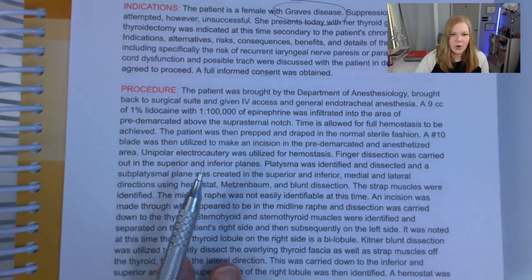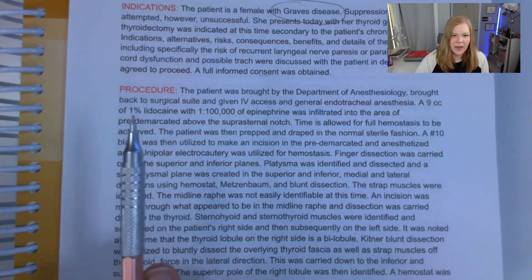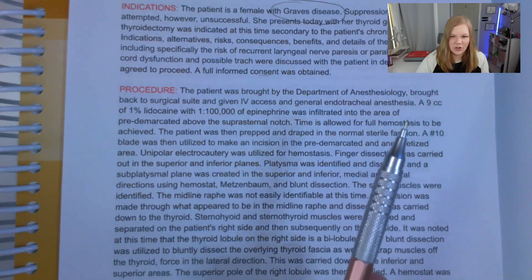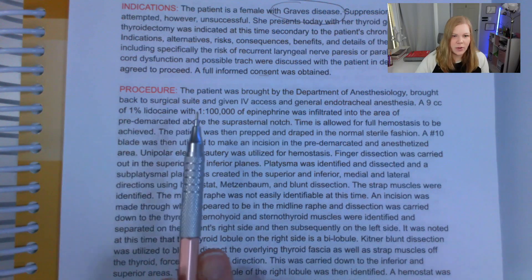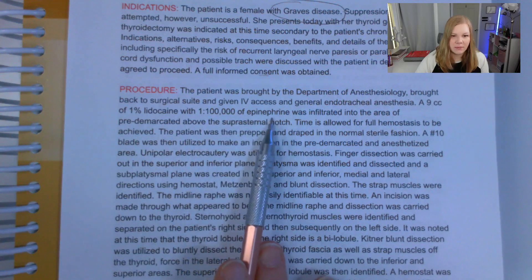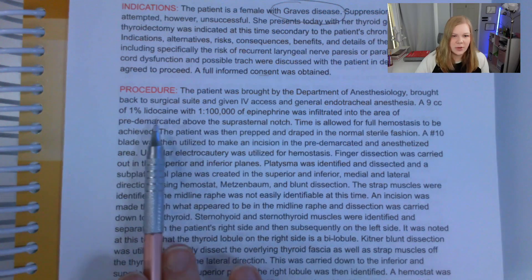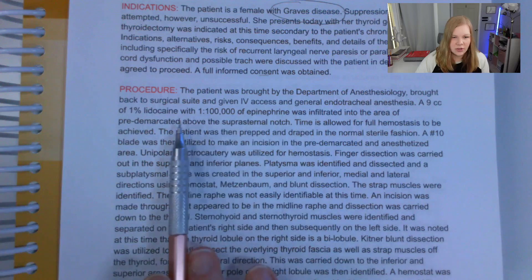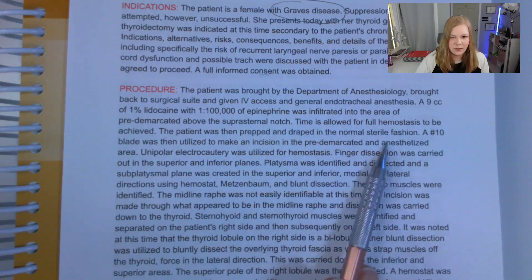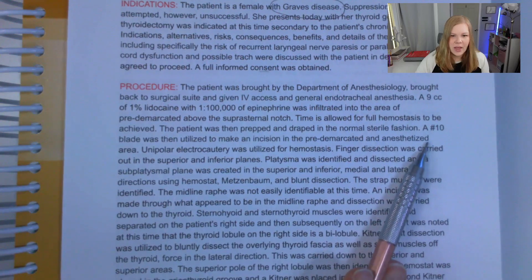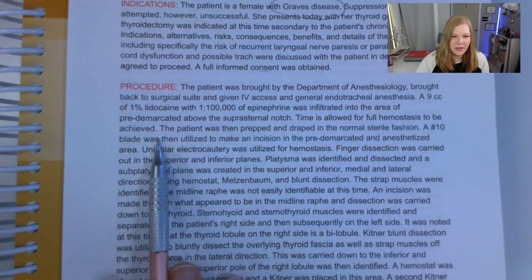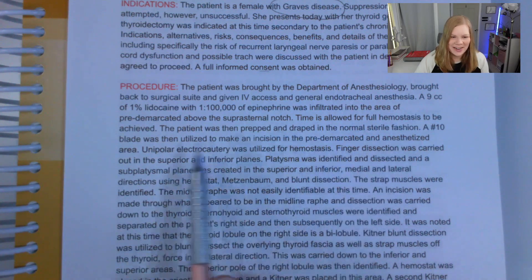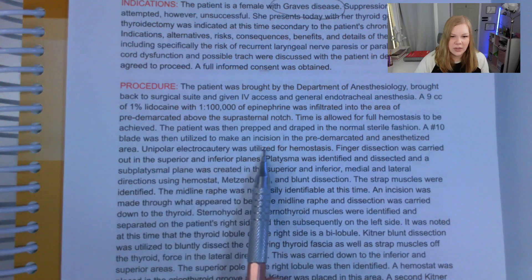The patient was brought back to the surgical suite, given IV access and general endotracheal anesthesia. Nine cc of 1% lidocaine with 1:100,000 epinephrine was infiltrated into the area demarcated above the sub-sternal notch. Time was allowed for full hemostasis to be achieved. The patient was then prepped and draped in normal sterile fashion. A number 10 blade was utilized to make an incision in the pre-demarcated and anesthetized area. Unipolar electrocautery was utilized for hemostasis.